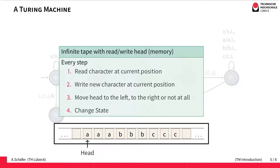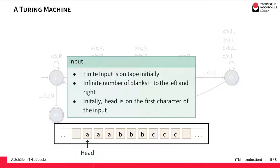Afterwards it will change the current state. Although we have an infinite tape, we require that the input is finite. The input should be on the tape initially with the head position on the first character of the input. The cells to the left and to the right are filled with so-called blanks, which is a special character indicating that the cell is empty. This special character may not occur in the input for the Turing machine.